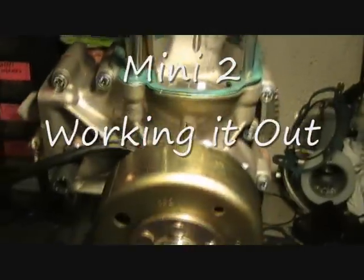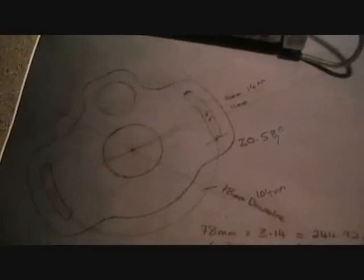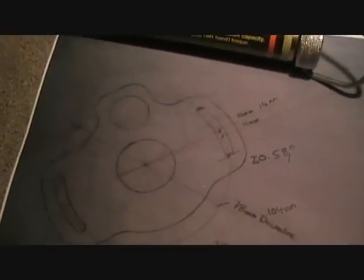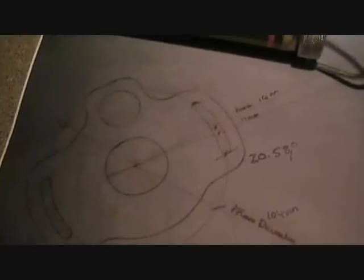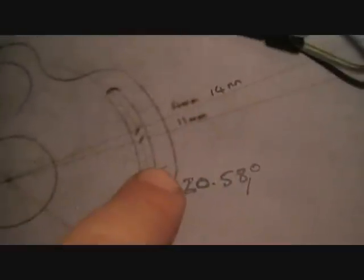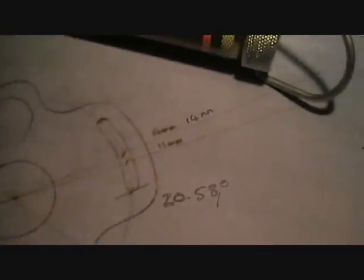Setting the ignition timing on a small two-stroke engine. I've got some info on it, some facts and figures. This is a tracing of the stator plate and the information that Simonini supplies—they say 40 millimeters from that point to there. But I wanted to work it out in degrees so I could mark the flywheel up.